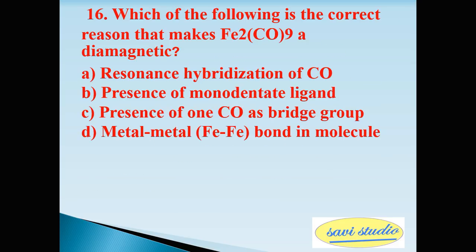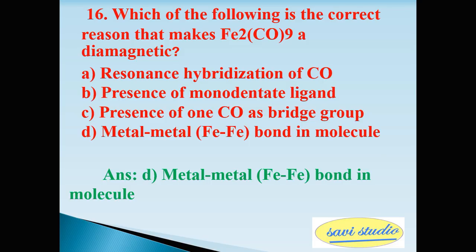Sixteenth question: which of the following is the correct reason that makes Fe2(CO)9 diamagnetic? A: resonance hybridization of CO, B: presence of monodentate ligand, Option C: presence of CO as bridge group, Option D: metal-metal Fe-Fe bond in molecule. The right option is D: metal-to-metal Fe-Fe bond in molecule.